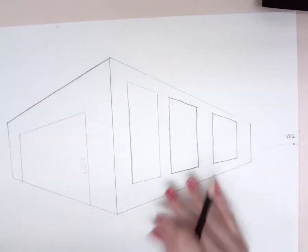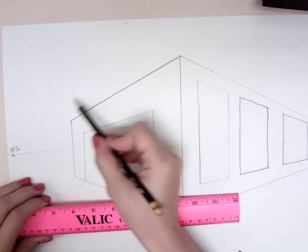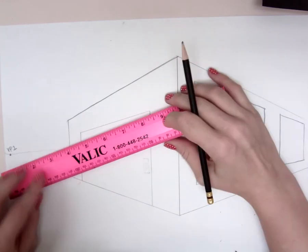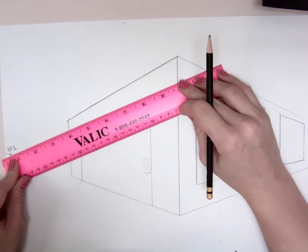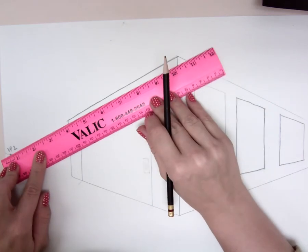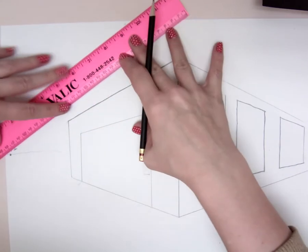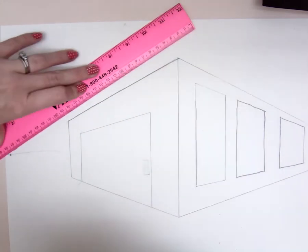For the top part of your castle, if you want it to look more authentic, you can add battlements. What you do is line up the ruler to vanishing point number one, if you're on the left side, which I am. You're going to move up and decide how tall you really want the battlements to be. I think that's a good length.